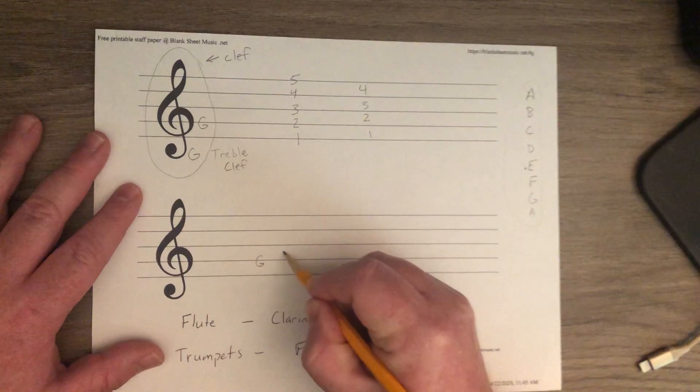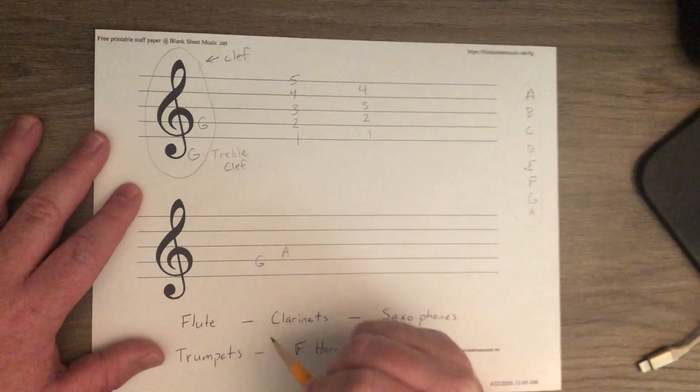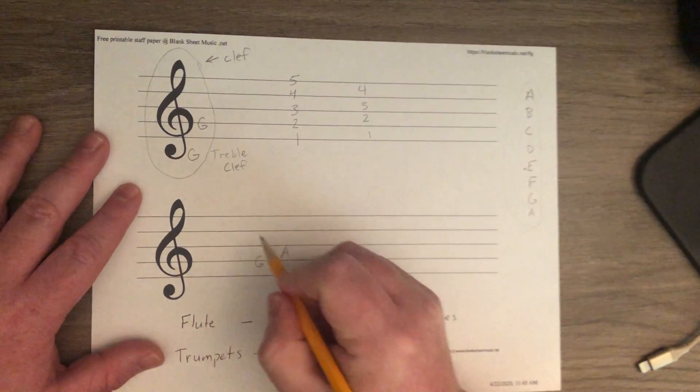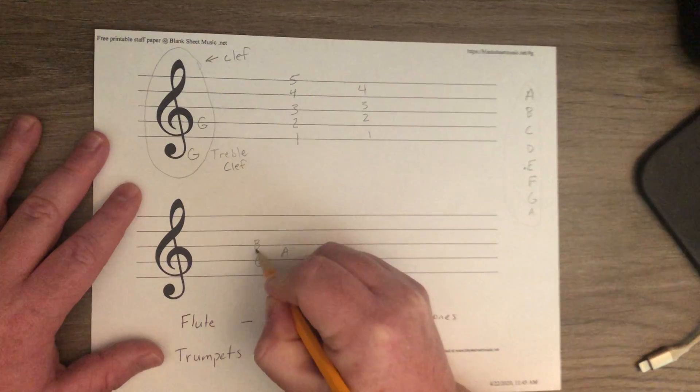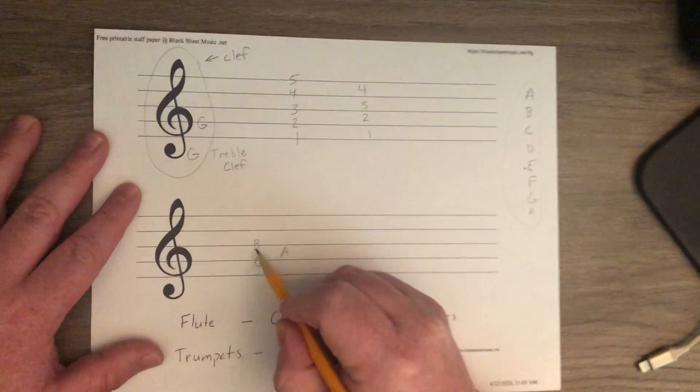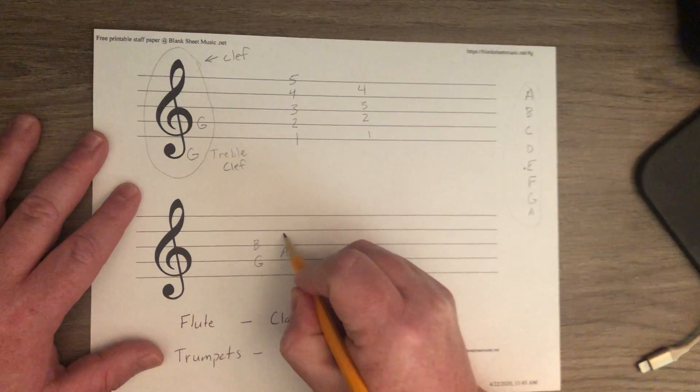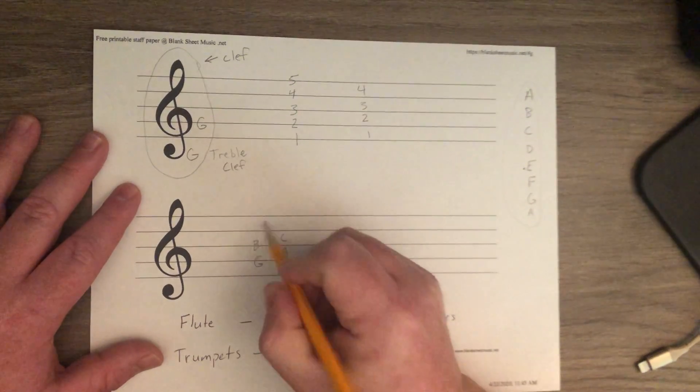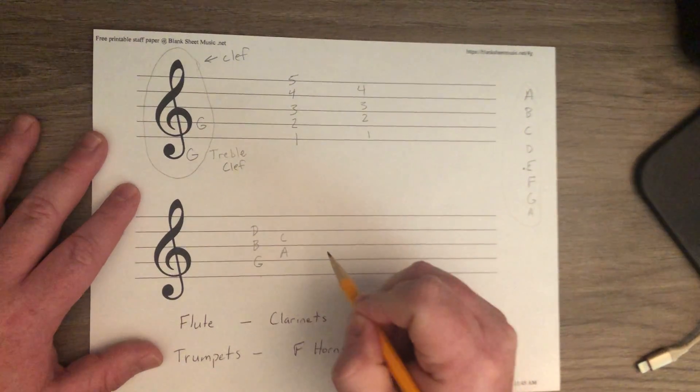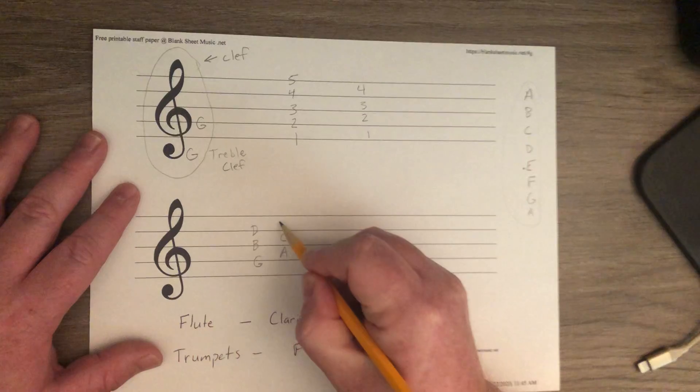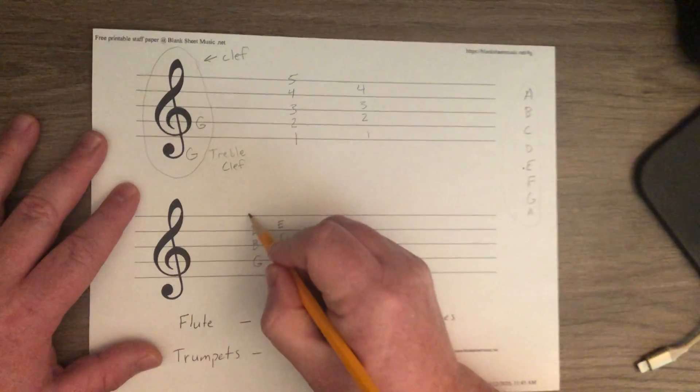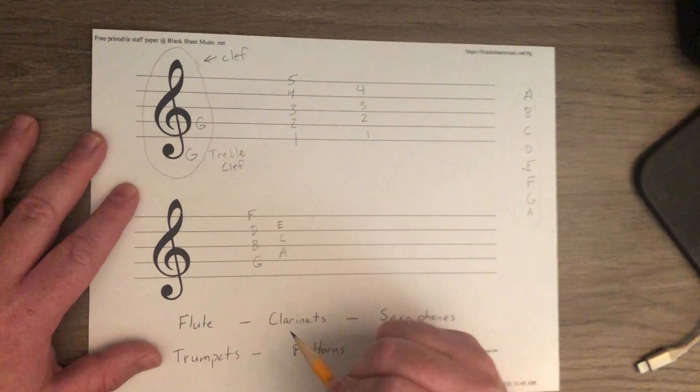So, after G, the space after that is an A. The line after that, what comes after A? You guessed it. B. After B, you can use your alphabet. C. After C comes D. After D comes E. And then F.